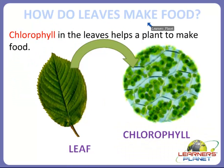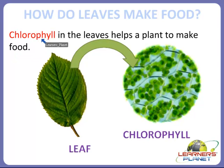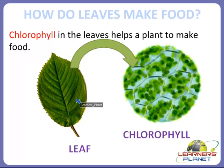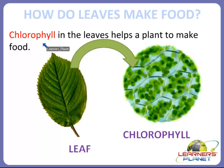How do leaves make food? As we studied in the previous session, chlorophyll is the substance which is present in the leaves and it helps a plant to make food. This is a picture of a leaf and there are many small substances present in the leaf — they are called chlorophyll.